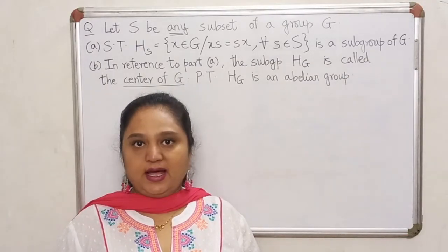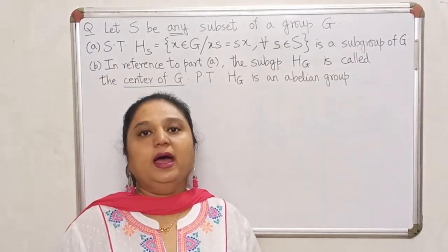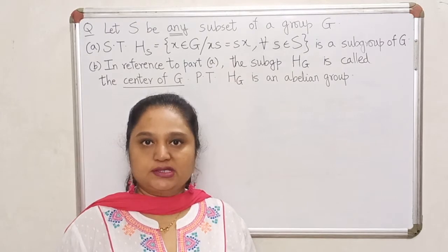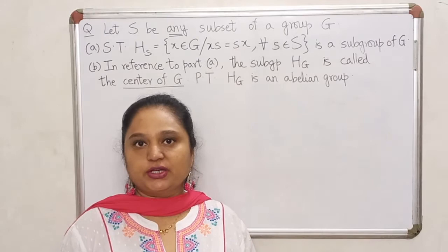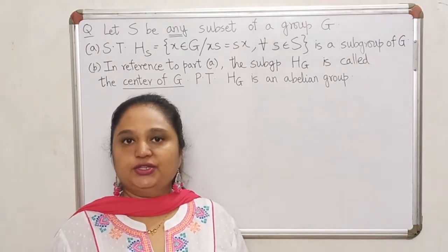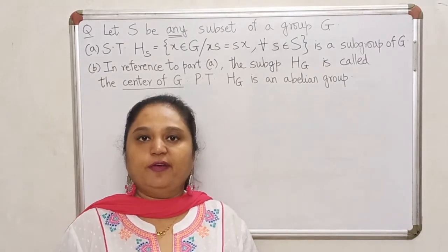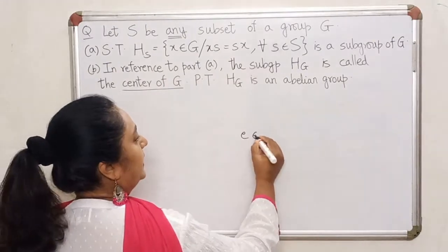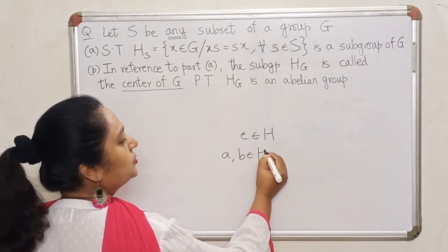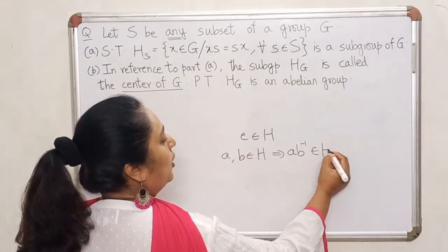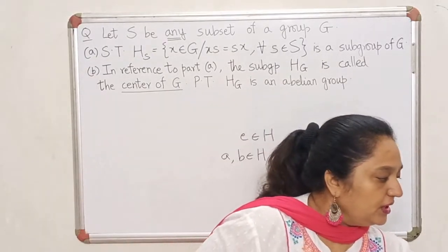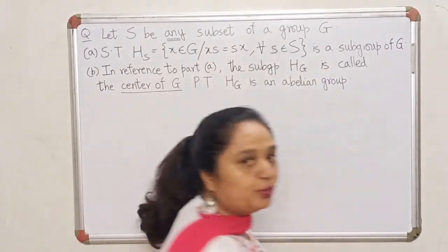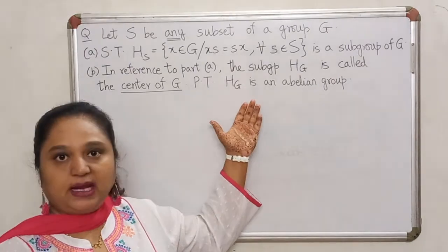Hello dear students. In the last few lectures we have seen the definition of a subgroup, and since the associative property is inherited, we don't need to verify it separately. We came up with the first necessary and sufficient condition for a subset to become a subgroup. Then in theorem 2, we need to check whether E lies inside the set and whenever A and B belong to the set, AB inverse also belongs. Today let's start with a new example.